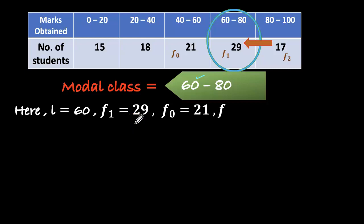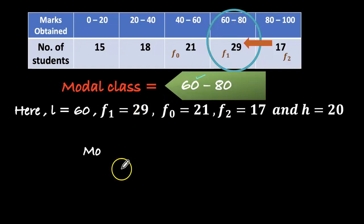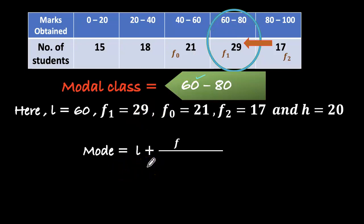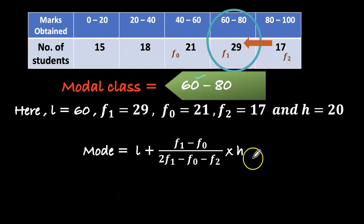Here, L equals 60, f1 equals 29, f0 equals 21, f2 equals 17, and h equals 20. Writing the formula: Mode equals L plus (f1 minus f0) divided by (2 times f1 minus f0 minus f2), into h. Let's substitute the values.